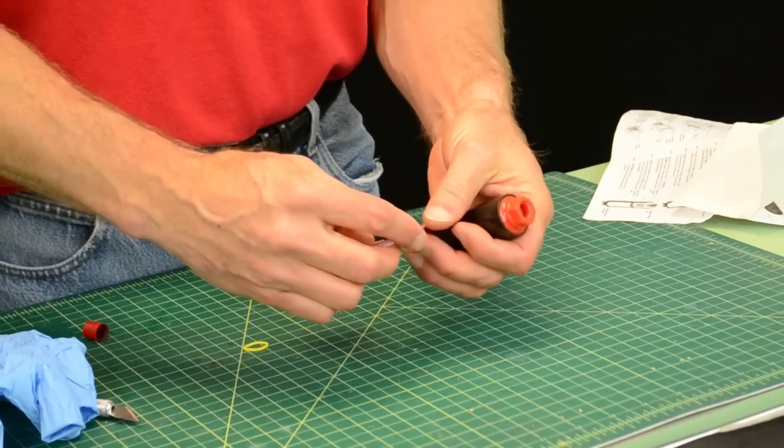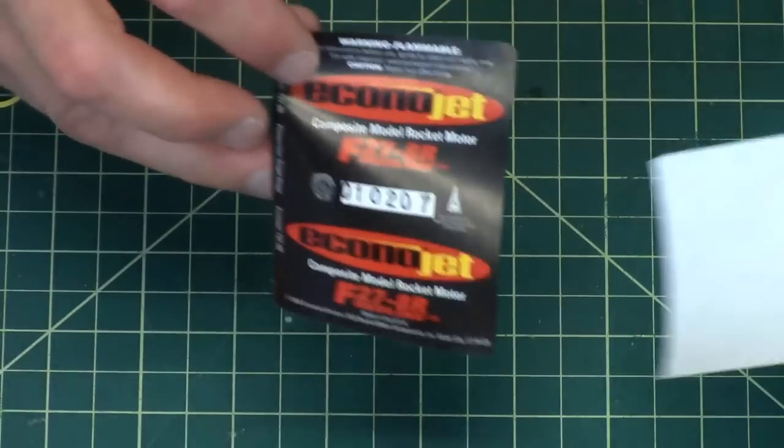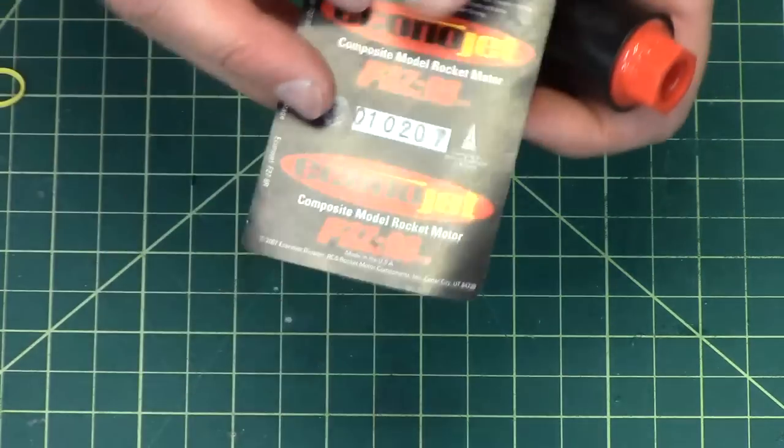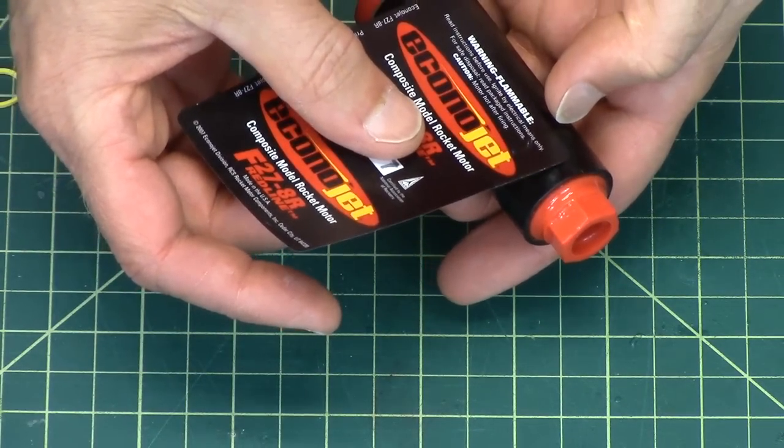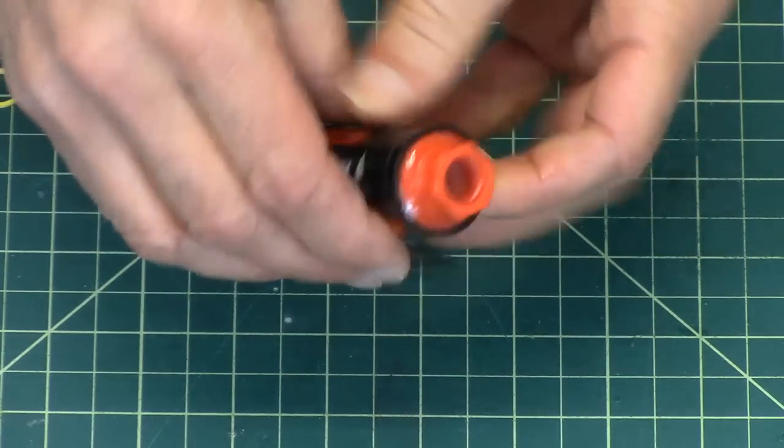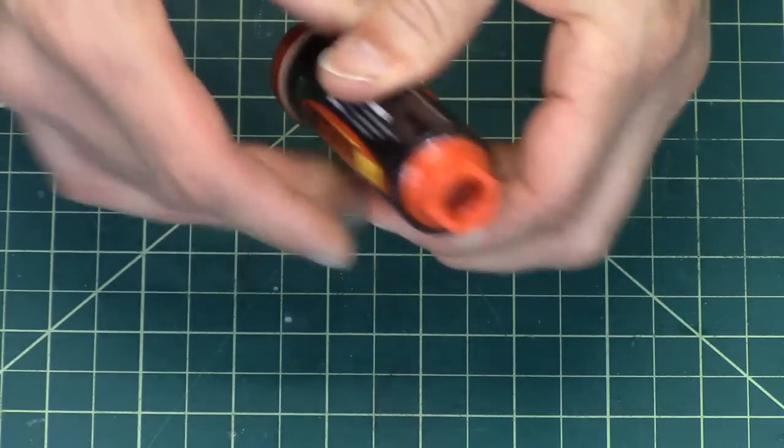To finish it off, this will be the sticker that tells us what is the rocket motor. And you just wrap it around the perimeter like that.